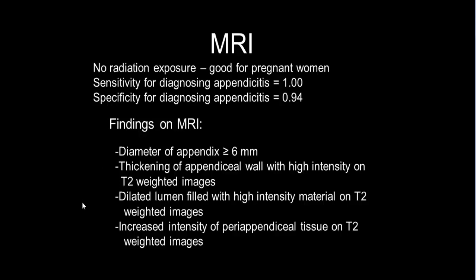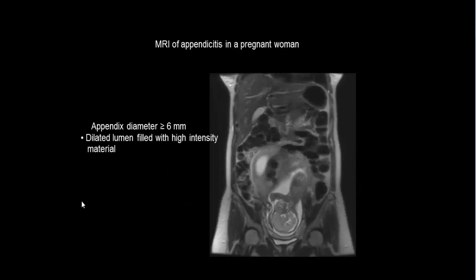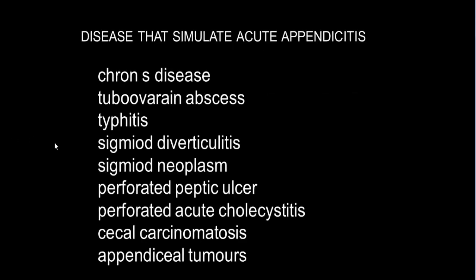MRI has no radiation and is good for pregnant women. Sensitivity for diagnosing appendicitis by MRI is 100%, and specificity is 0.94. MRI findings are similar to CT: appendix diameter of 6 mm or greater, thickening of the appendiceal wall with high signal intensity on T2-weighted images, and dilated lumen filled with high-intensity material on T2. An example shows a pregnant woman with appendix diameter greater than 6 mm and dilated lumen with high-intensity material.